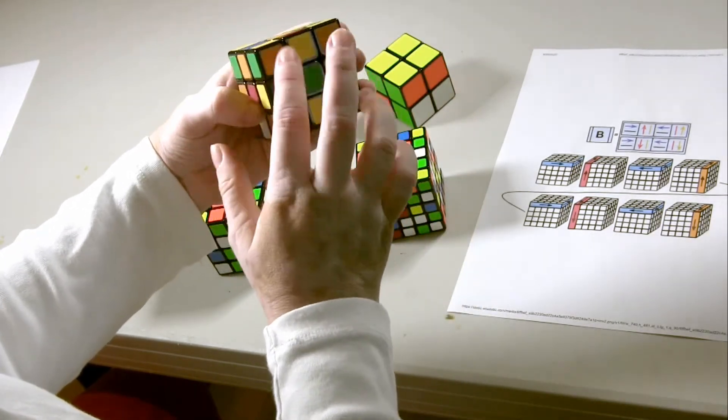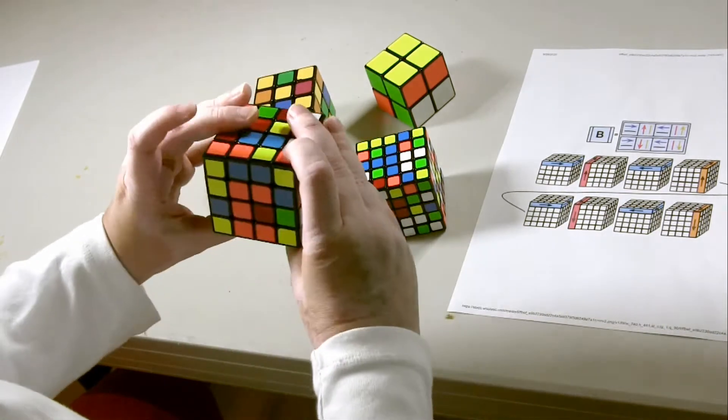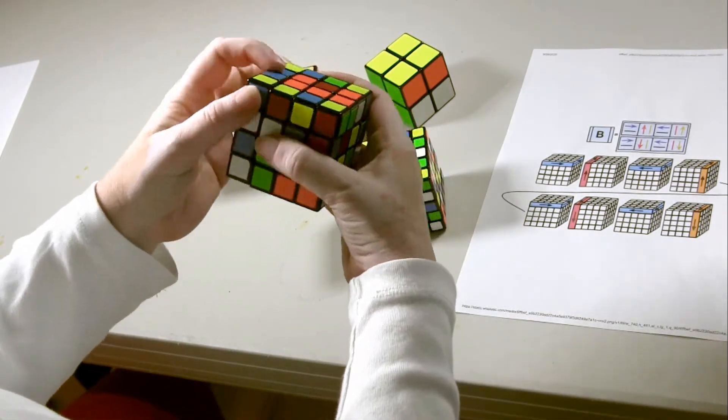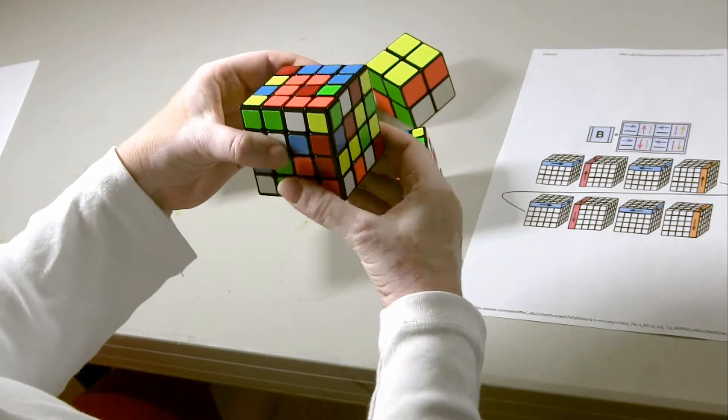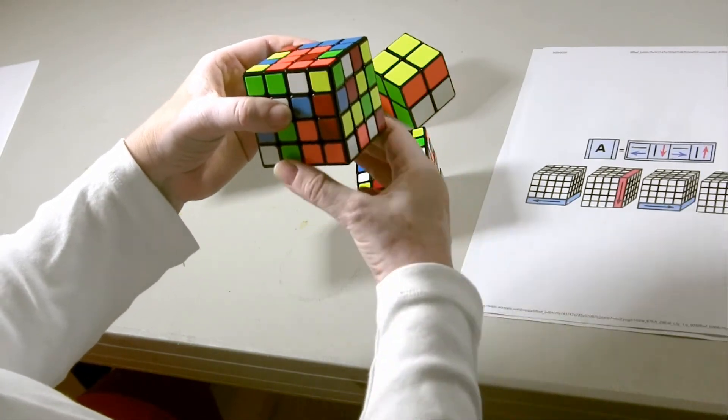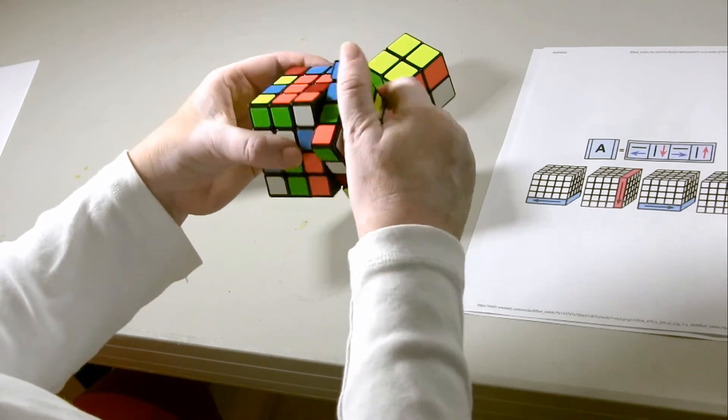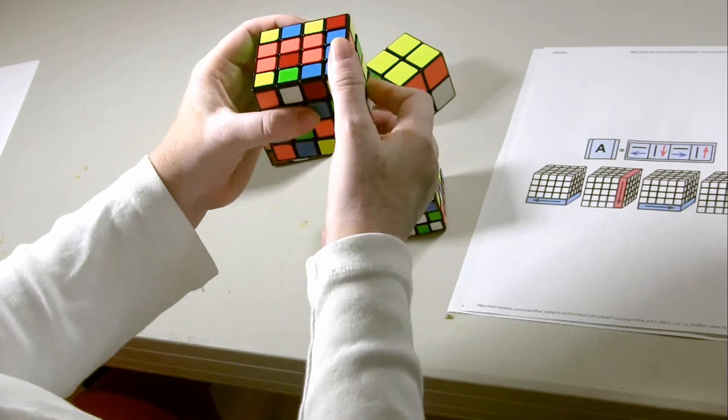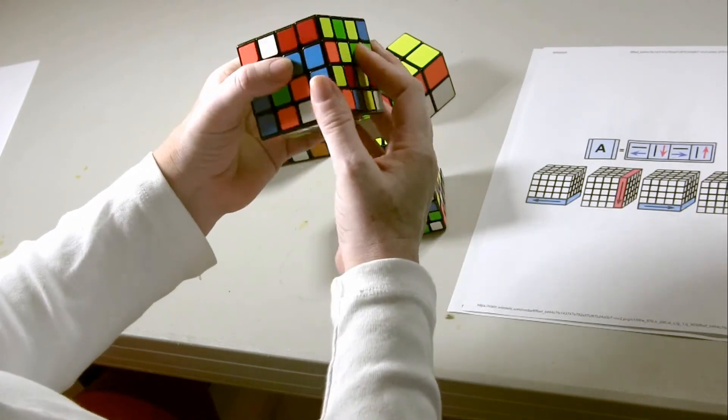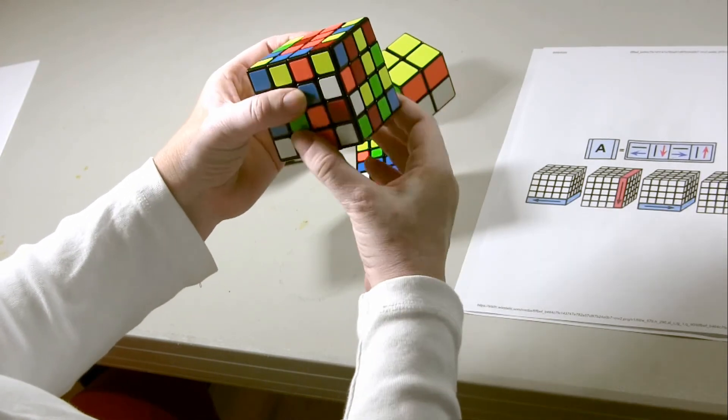The corners now match each other and once again matching in the back, Formula B. Up, up, down, down, out, down and up, slide, continue, slide, continue.